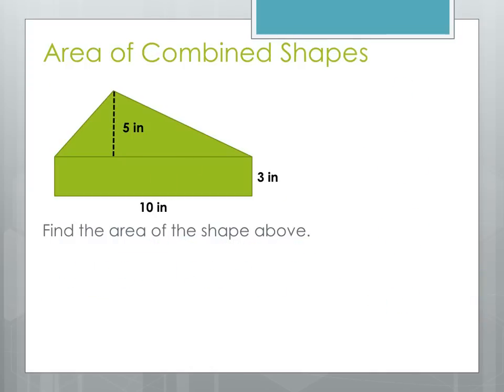Here we need to find the area of some combined shapes. If we look closely, the shape on this page has two different components: a rectangle on the bottom and a triangle on the top. To find the total area, we'll find the area of the rectangle and the area of the triangle and add those two together. Let's start with the rectangle.